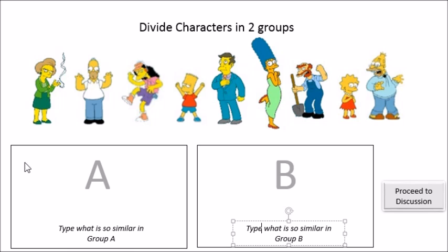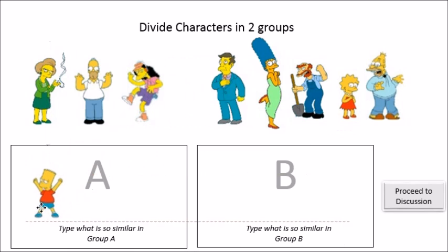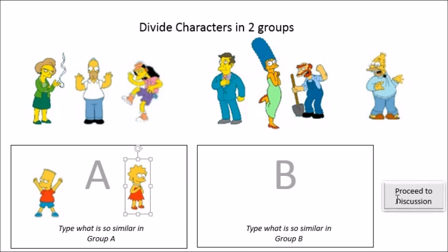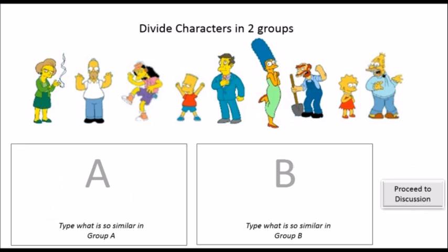You can simply do that by dragging the characters into each group, like so. And once you're done, click on proceed to discussion button to continue. While doing this exercise, you must have realized that there are no unique fixed groupings.